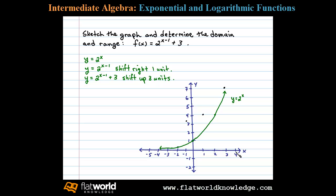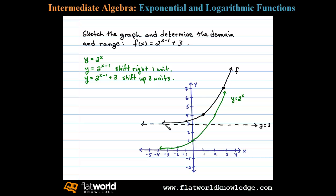We also notice that y equals 0, the x-axis, is a horizontal asymptote for the basic graph. When we shift that up three units, we get y equals 3 as a horizontal asymptote for the final graph. I'll draw that in and then sketch the graph of f of x.